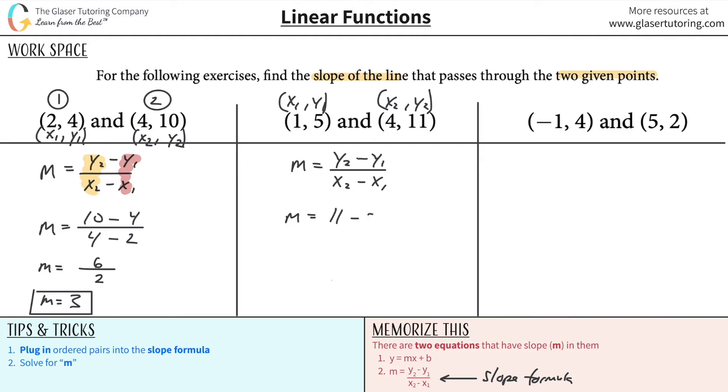So y2 is 11. y1 is 5. My x2 is going to be 4. And my x1 is 1. So let's do the math here. Right? 11 minus 5 is 6. 4 minus 1 is 3. And 6 divided by 3 is now 2. There is your slope.